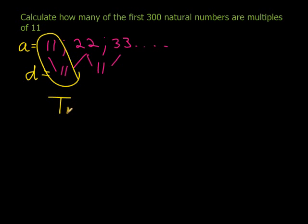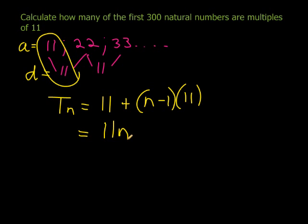So my general term, it wasn't necessary to go this technical route, but you'll see just now it makes a lot of sense. When you solve this one, you get 11n, which makes sense. The first term is 1 times 11. The second term is 2 times 11. The third term is 3 times 11, and so forth.